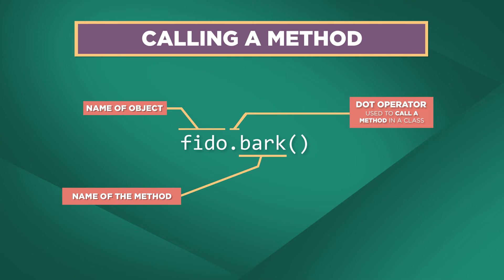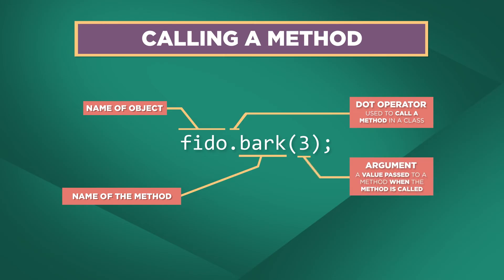Since the bark method has a parameter for how many times it should bark, we have to call the method with a number value. Inside the parentheses, we specify the number of times we want Fido to bark. Let's tell Fido to bark three times. When we specify a value inside the parentheses, this is called an argument. An argument is a value passed to a method when the method is called.